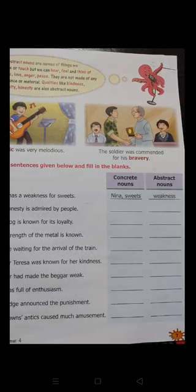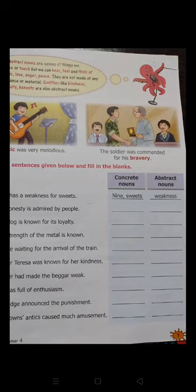The next example is: the soldier was commended for his bravery. Children, can you hold or touch bravery? No. So this is an abstract noun. Bravery is a quality. And I told you that qualities like kindness, loyalty, and honesty are also abstract nouns. So bravery is an abstract noun.